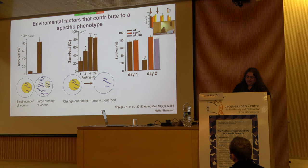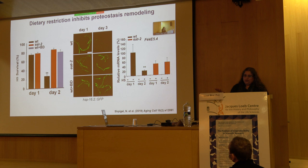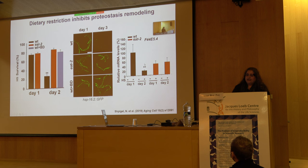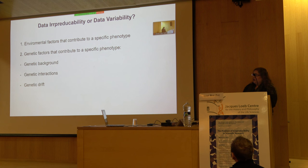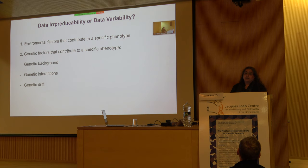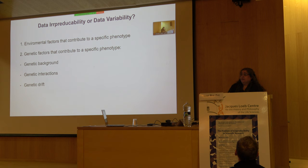We always try to do things properly — we did the survival assay, the reporter, and gene activation, and in all cases the lack of food, either by mutation or by removing food, rescued the ability to activate the stress response. This is an example of an environmental factor you think you control but realize in retrospect you weren't controlling. Sometimes you don't think that having 10 worms versus 20 worms will have such a big impact on your system, and I can assume that some people didn't notice that.